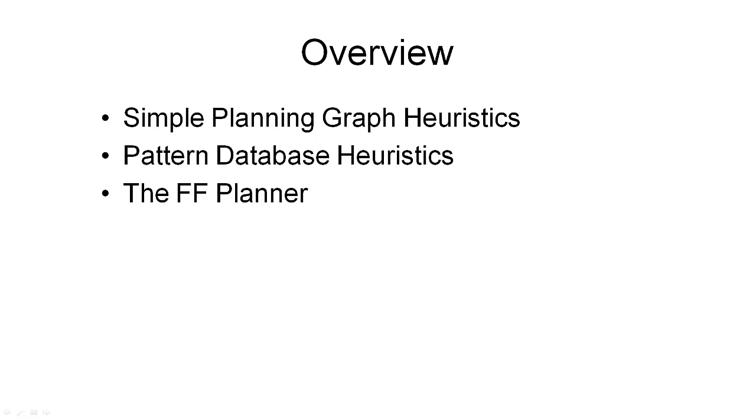In the second week of this course, I told you about heuristic search and the A star algorithm. Then I showed you how STRIPS planning problems can be solved using forward state space search, which implicitly assumed you can use the A star algorithm for this. But of course, one of the things that A star needs is a heuristic that tells us how far from the goal the current state is. And that's what we're going to look at in this segment. We're going to start off by some simple heuristics that can be directly derived from the planning graph we've just seen.